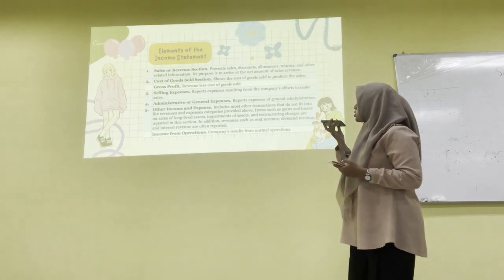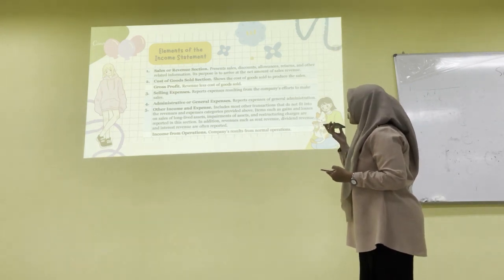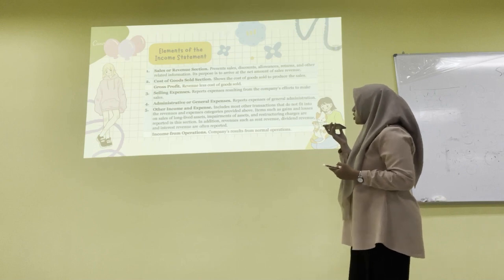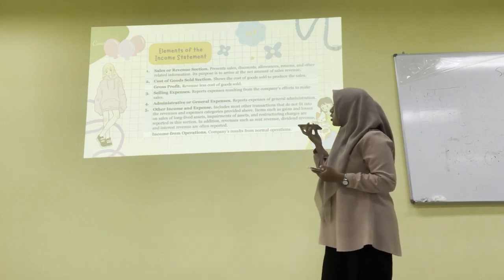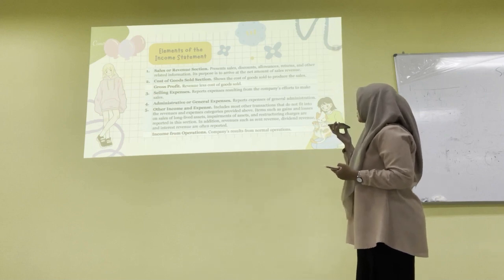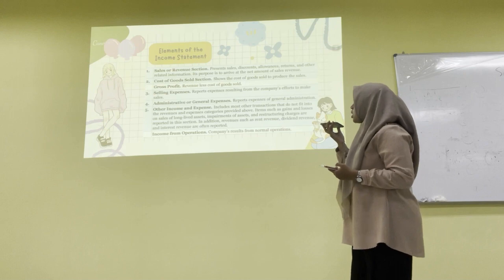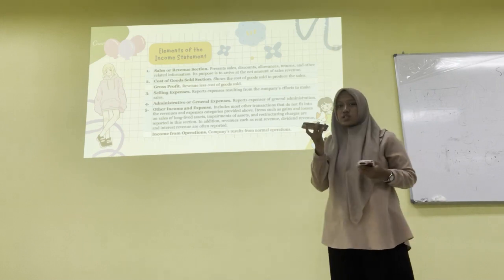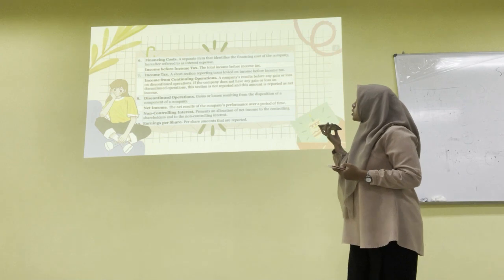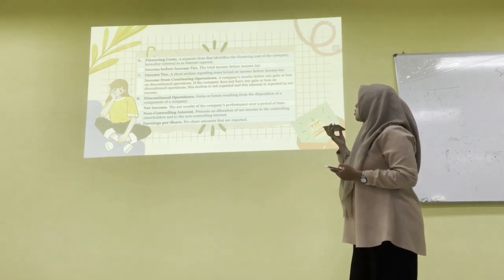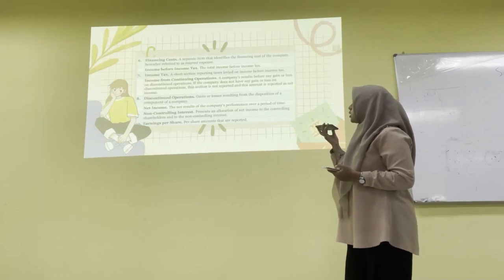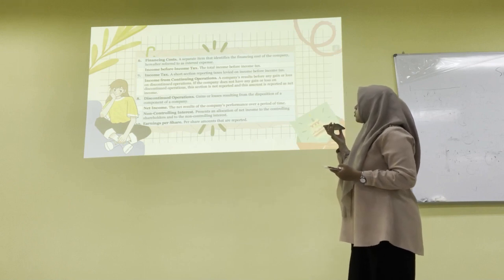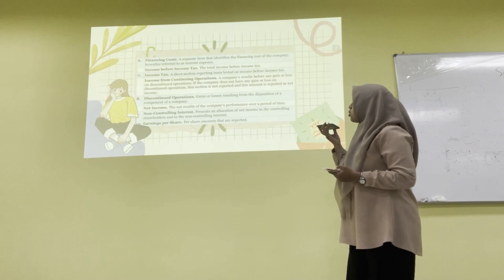Third, selling expenses report expenses resulting from the company's effort to make sales. Fourth, administrative or general expenses report expenses of general administration. Fifth, other income and expenses include transactions that do not fit into the revenues and expenses categories above. We also have income from operations, representing the company's result from normal operations. Sixth, financing cost is a separate item identifying the company's financing cost. Then income before income tax, and income tax — a short section reporting taxes levied on income before income tax.